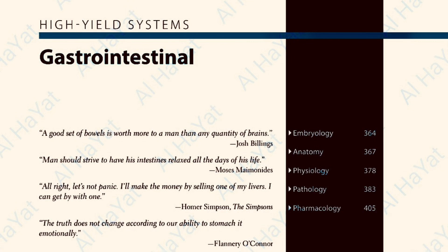Jejunal and ileal atresia result from disruption of mesenteric vessels, typically the superior mesenteric artery, leading to ischemic necrosis of fetal intestine and segmental resorption. The bowel becomes discontinuous. X-ray may show a triple bubble sign with a dilated stomach, duodenum, and proximal jejunum, and a gasless colon. It is associated with cystic fibrosis and may be caused by tobacco smoking or use of vasoconstrictive drugs such as cocaine during pregnancy.